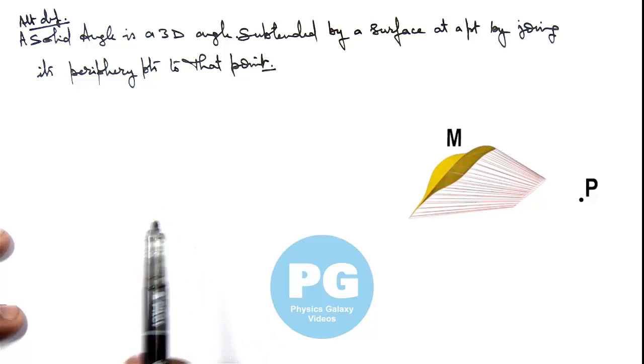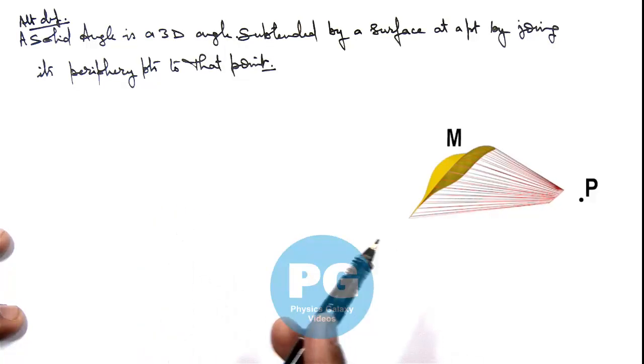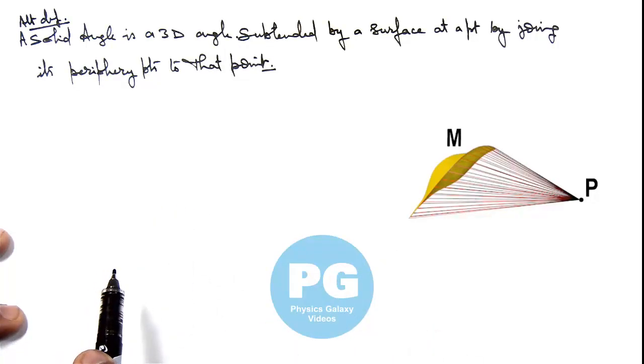So this angle which is subtended by the surface at this point P, or a 3 dimensional region enclosed by this conical surface, we call a solid angle subtended.